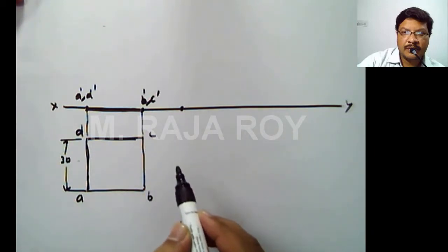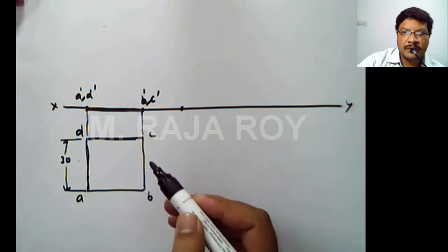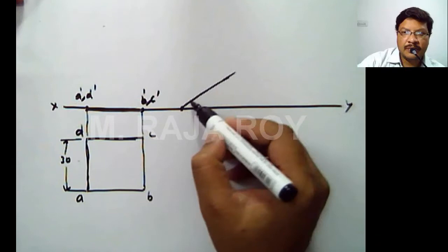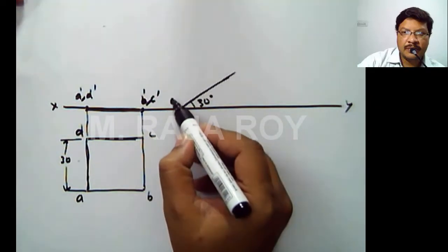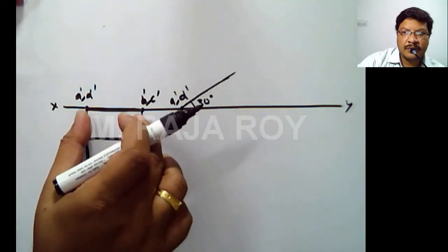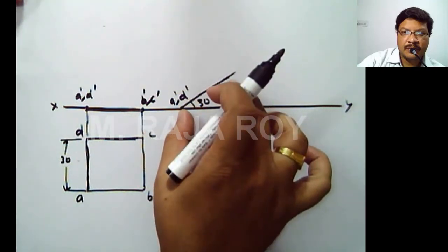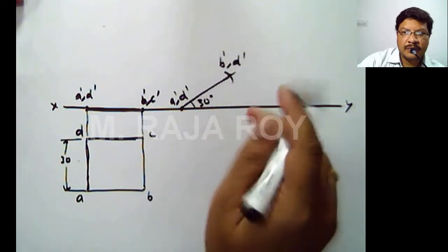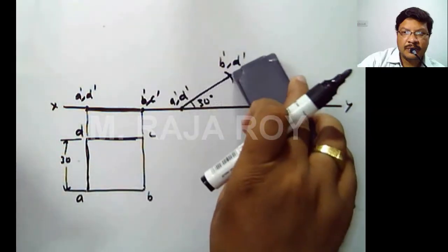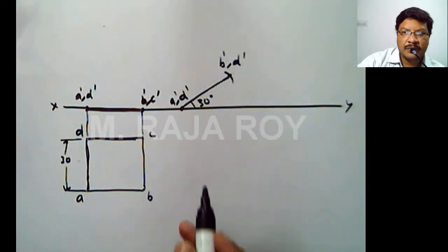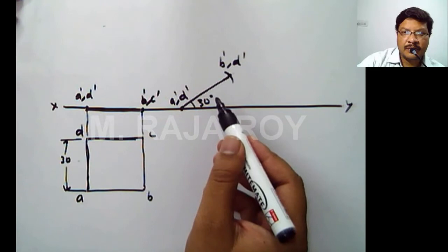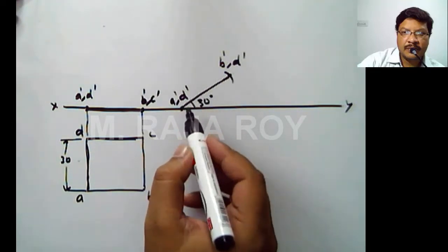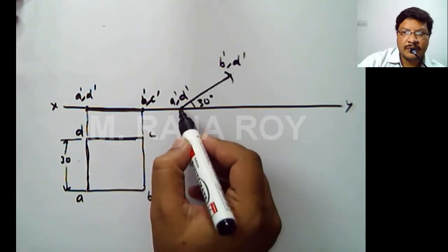In the second stage, you have to represent the surface inclination. When the surface inclination is 30 degrees, draw a 30 degree line. This angle is 30 degrees — this point is A dash, D dash. Take this distance with a compass and draw an arc taking A dash as center. Somewhere here you will get that arc, and automatically this point will become B dash and D dash. This is the second front view, in which you have represented the surface inclination. When the surface is inclined to HP, you will get the reduced shape in the top view — that reduced shape you have to obtain.